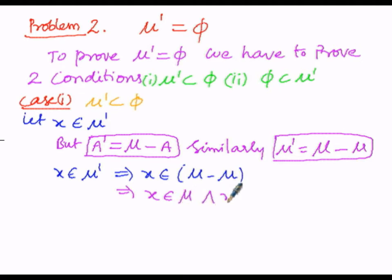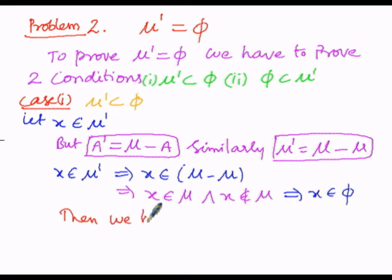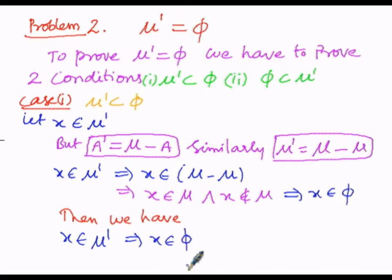So x belongs to μ and x does not belong to μ — this does not have any meaning. Therefore that implies x belongs to the empty set, that is φ. From this it is clear that the LHS is x belongs to μ dash, which implies the RHS is x belongs to φ. The element which is present in μ dash is also an element of the empty set φ. Therefore μ dash must be the subset of the empty set φ.